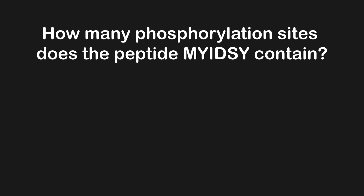Now let's apply our knowledge to some MCAT-style questions. This first question asks: how many phosphorylation sites does the peptide MYIDSY contain? Remember, our mnemonic is YST, so only the Y, S, and T amino acids are going to be phosphorylation sites. In this peptide, we have a Y, an S, and another Y — so overall, this contains three total phosphorylation sites.